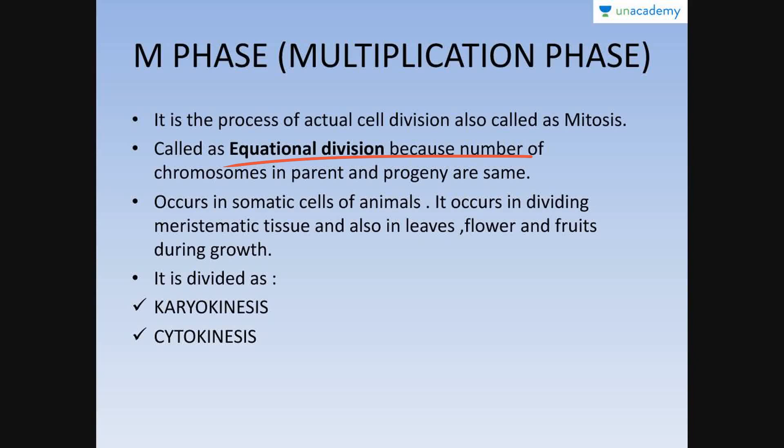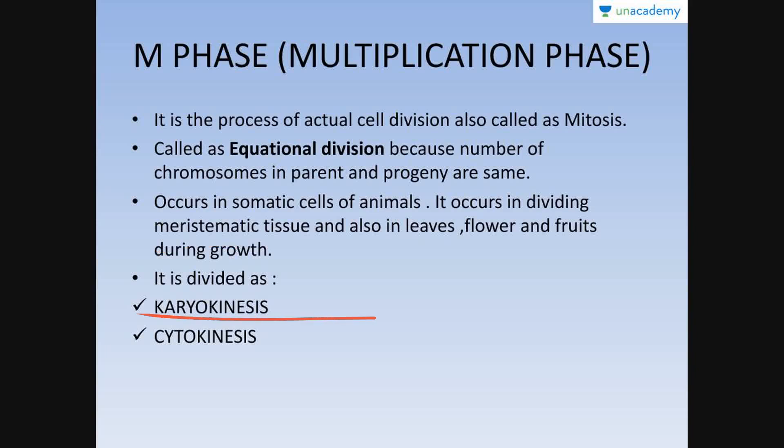This is achieved because during the interphase, DNA replication has already occurred and the replicated DNA forms the sister chromatids. These sister chromatids separate during the M phase, leading to equational division. The process of mitosis occurs in the somatic cells of animals, and in plants it occurs in the meristematic tissue and in some leaves, flowers, and fruits during the growth process.